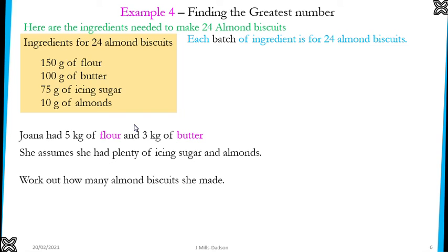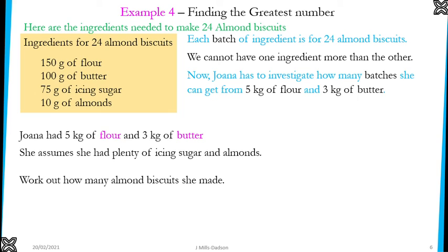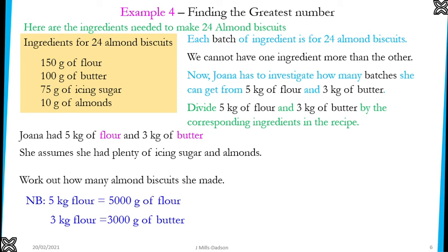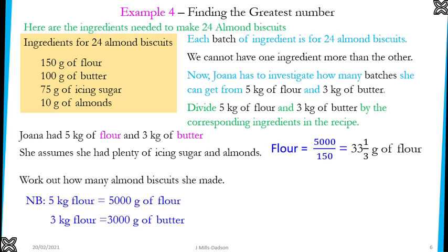To investigate, let's convert 5 kilograms and 3 kilograms into grams. 5 kilograms is 5,000 grams and 3 kilograms is 3,000 grams. We are now going to divide the flour Joanna has by the flour in the recipe, and divide the butter she has by the butter in the recipe. Flour gives 33 and a third batches. Butter gives exactly 33 batches.